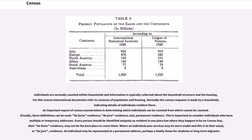An important aspect of census enumerations is determining which individuals can be counted and which cannot. Broadly, three definitions can be used: de facto residence, de jure residence, and permanent residence. This is important to consider for individuals who have multiple or temporary addresses.